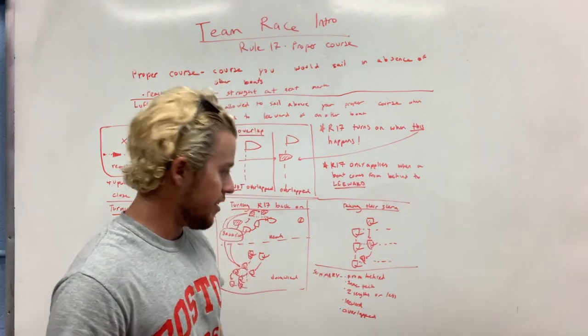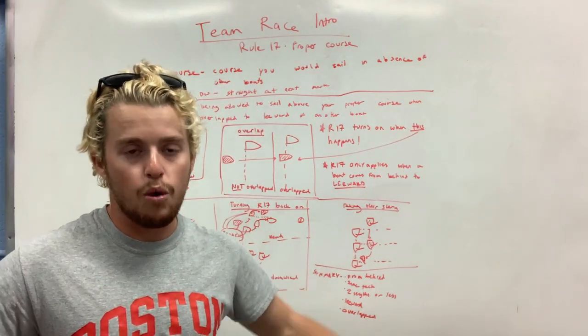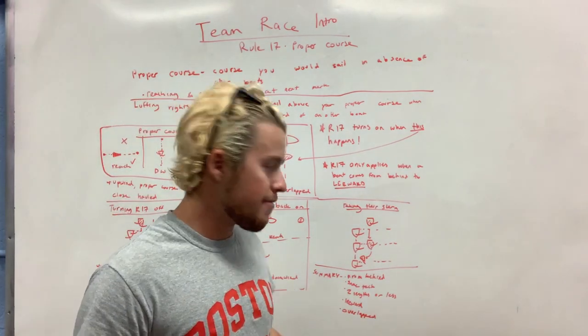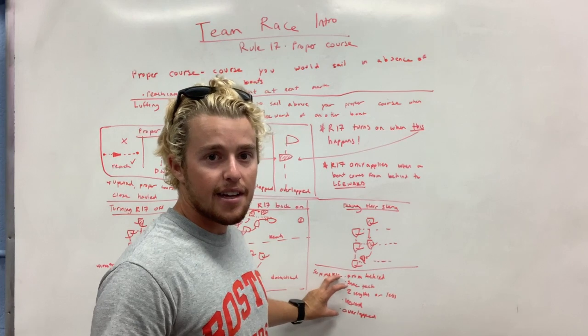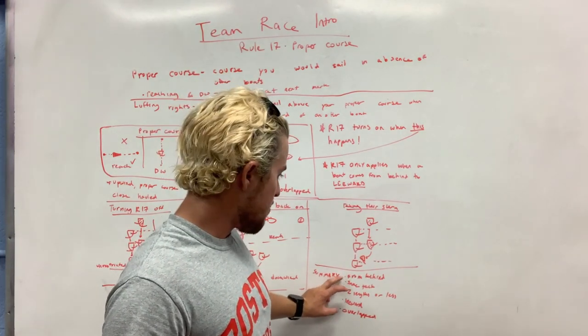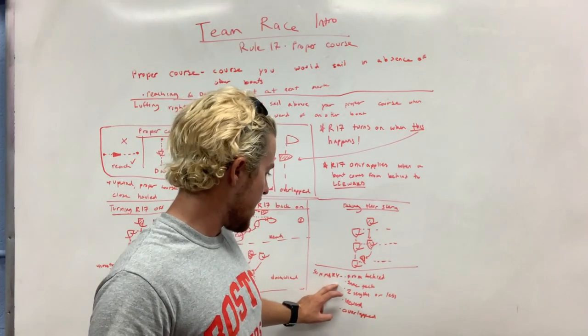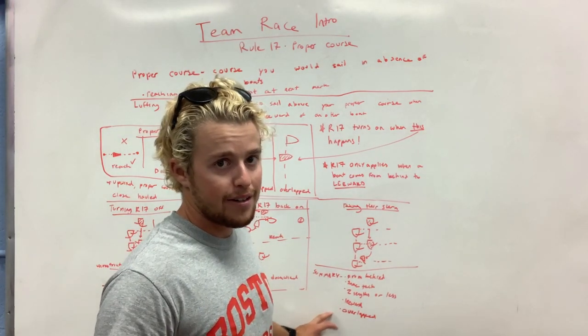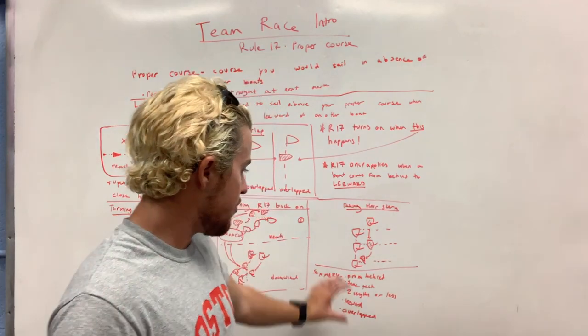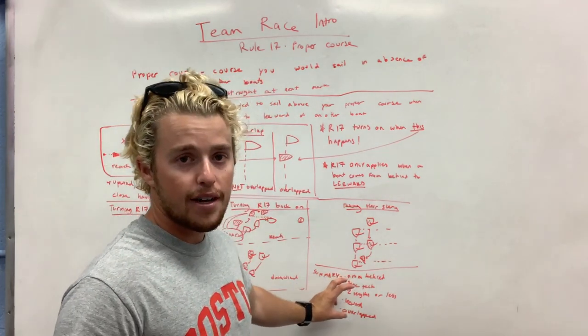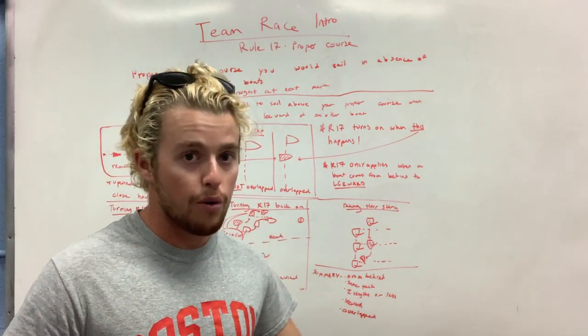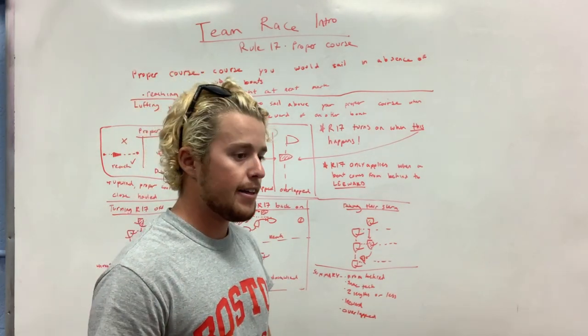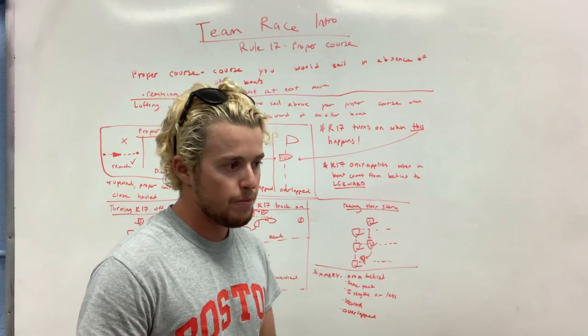So summary. Just your checklist. Am I restricting? We've got to hit all of these. If every single one of these is hit, then we are restricted. So from behind, same tack, two lengths or less, leeward, overlapped. This is not an order of importance. But if you can just hit all those five things, then you are restricted. You don't have luffing rights. If any one of these is not true, then you have luffing rights and you can luff the other boat.